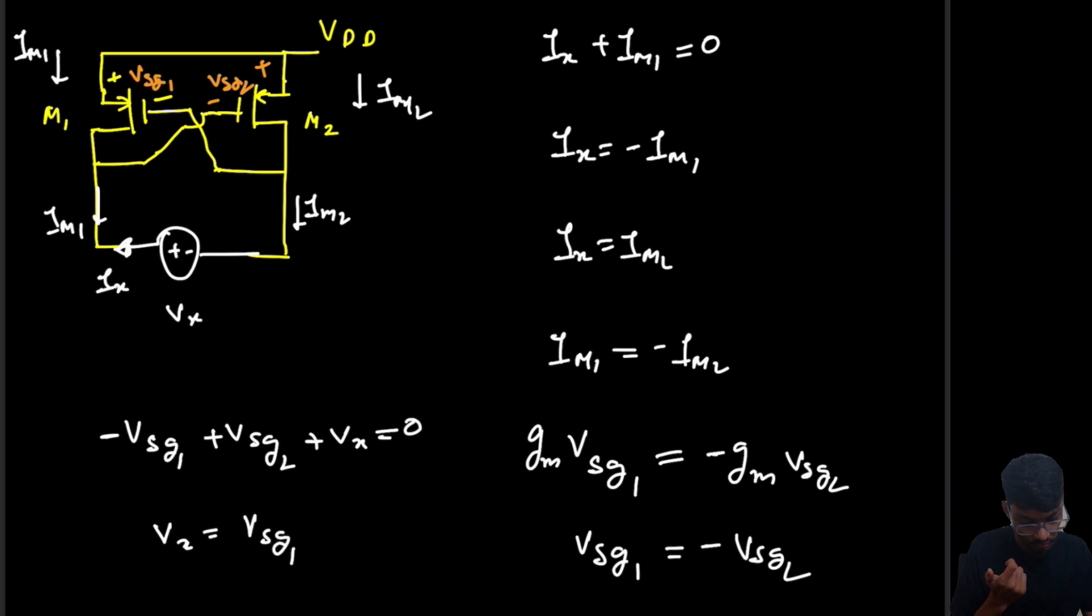So what is V_x? V_x equals V_SG1 minus V_SG2. Now we have calculated the value of V_SG1, which is minus V_SG2, so we get V_x equal to minus 2 V_SG2.